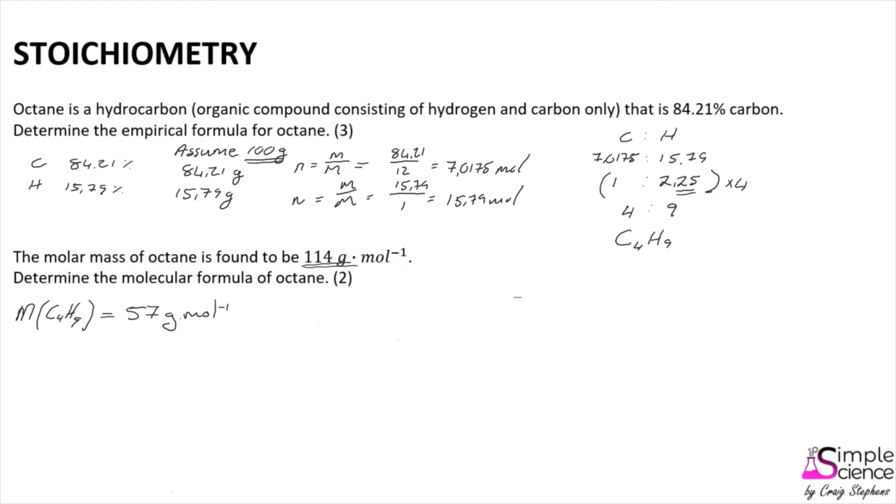What we can then hopefully see is that 57 grams per mole is exactly half of the molar mass for the actual molecular formula of octane, which means that in order to find the molecular formula, we need to multiply the empirical formula by 2, which means that the actual molecular formula for octane would be C8H18.